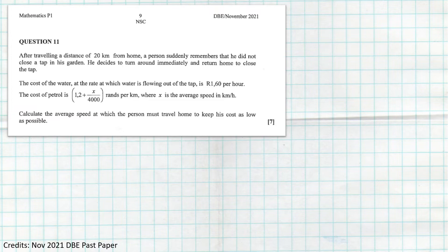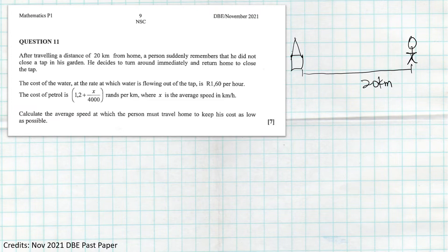The question says: after traveling a distance of 20 kilometers from home, a person suddenly remembers that he did not close the tap in his garden. I'll show a rough sketch — the person has traveled 20 kilometers and then remembers he did not close the tap. He decides to turn around immediately and return home. We are given that the cost of water flowing out of the tap is R1.60 per hour.